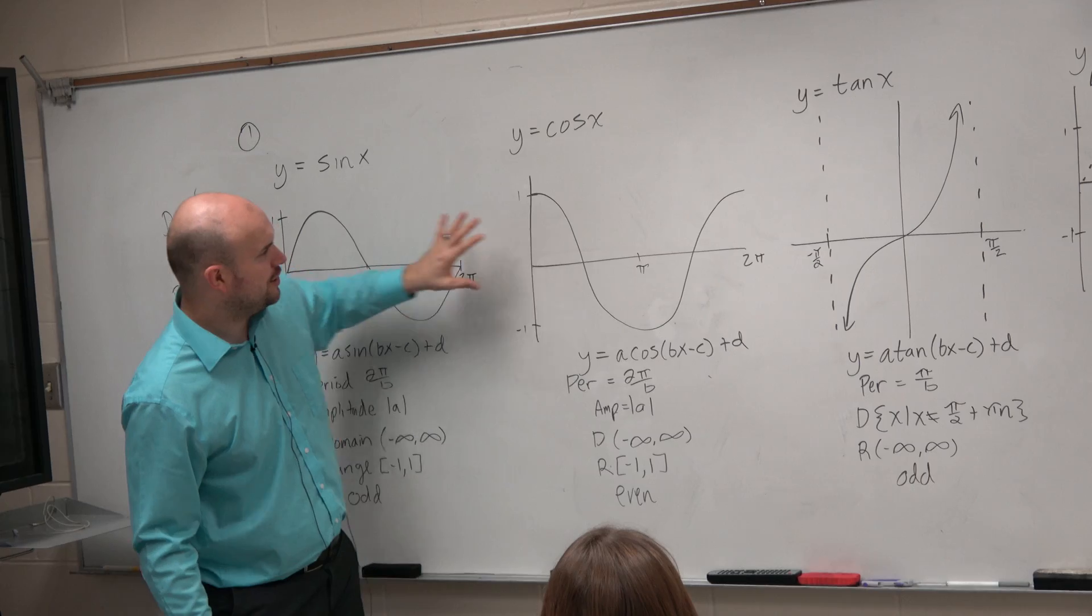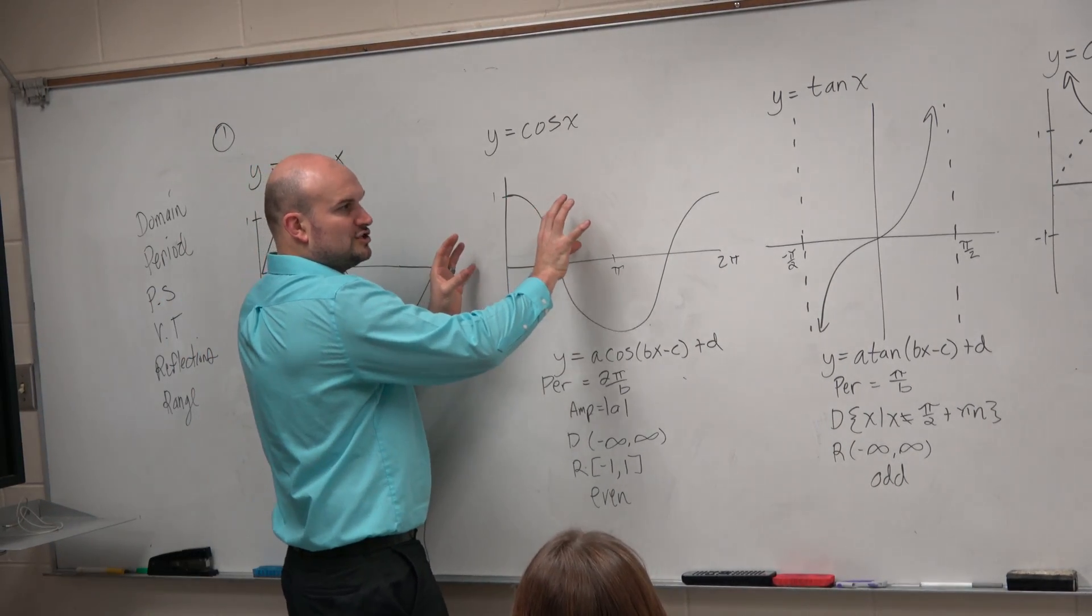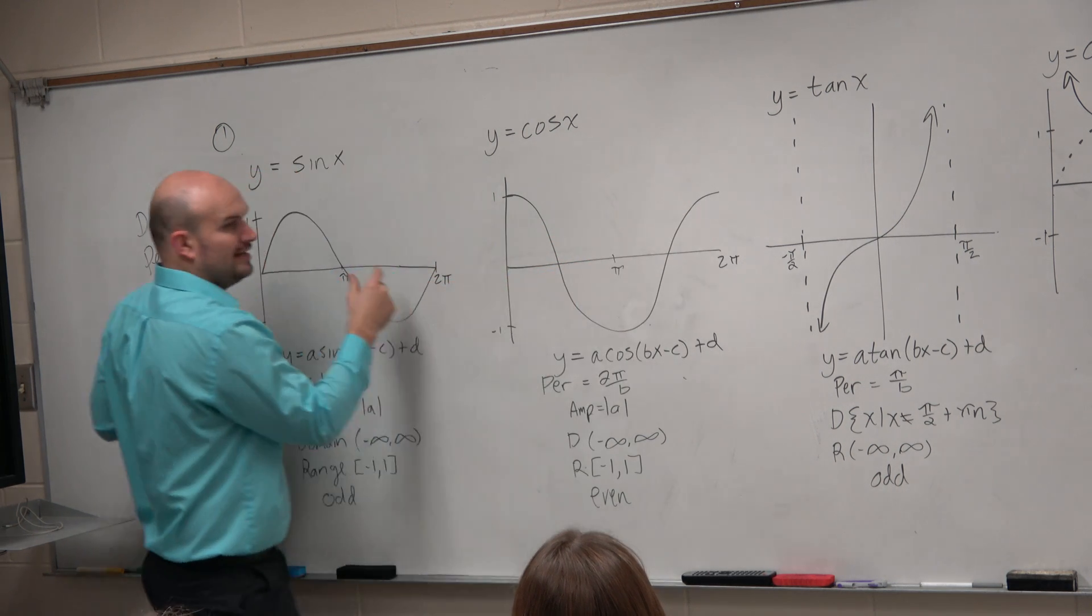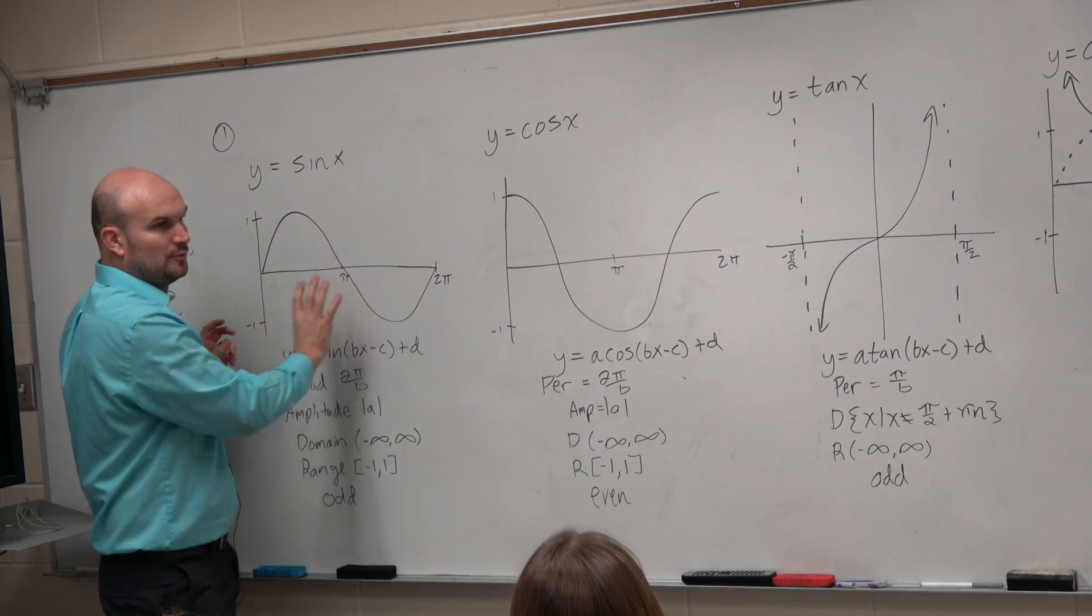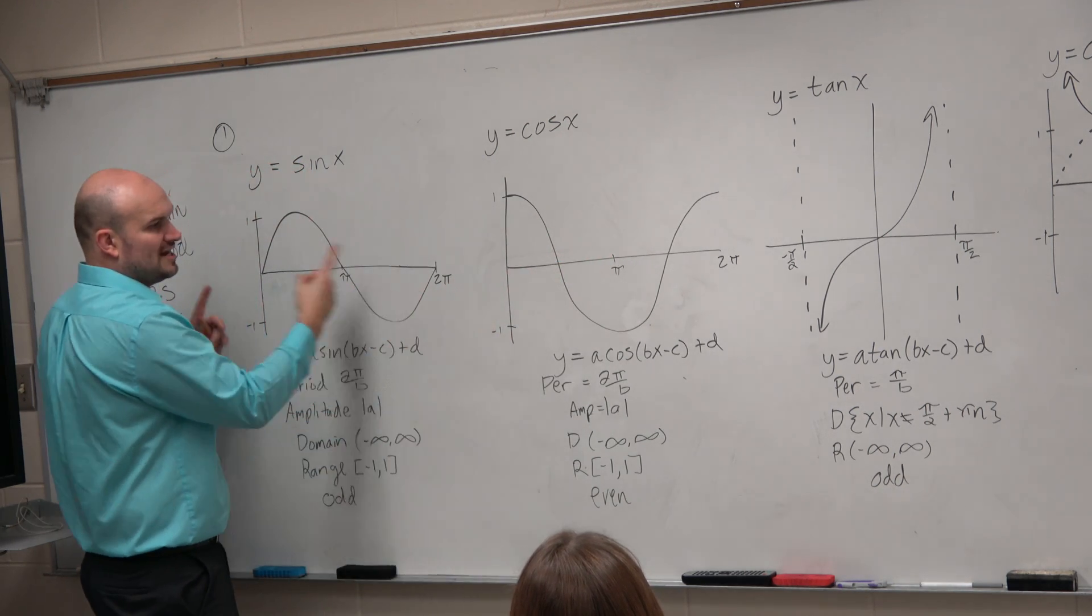So when we look at cosine to sine, you can see that cosine and sine look very similar. If I just really took cosine and shifted it over a little bit, it would look just like sine. Right? And we'll learn about that later as far as how much you need to shift for cosine to look just like sine.